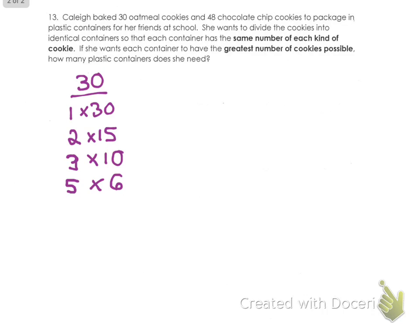So chocolate chip cookies are going to be our next group. We have 48 chocolate chip cookies. So we are going to find the factor pairs for 48. We're going to start off with 1 times 48. 48 is an even number, so now we're going to do 2 times 24. Yep, half of 48 is 24.